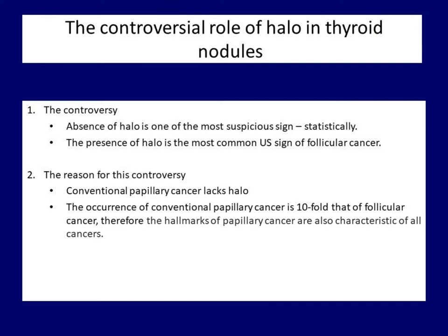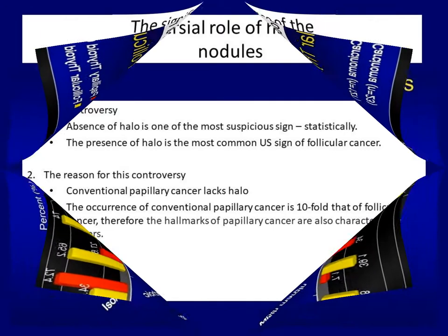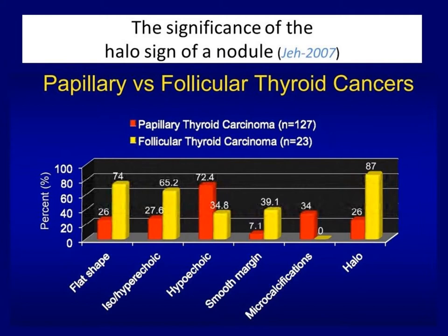The other reason is even more important: follicular cancer behaves just the opposite of papillary cancer. The most common feature of a follicular neoplasia is the halo sign, so if we relied on the absence of halo, most follicular cancers would be overlooked. Because the overwhelming majority of thyroid cancers are papillary tumors, the features of papillary cancer dominate our image of thyroid cancers. Papillary and follicular cancers behave quite differently for most suspicious signs, and the differences are statistically significant regarding all features.